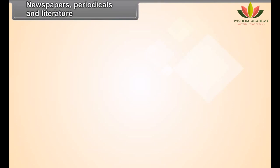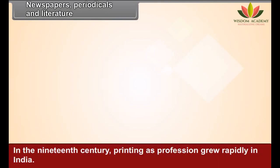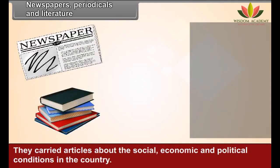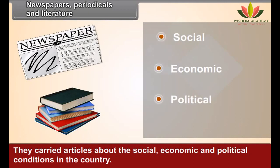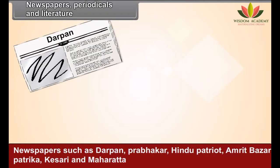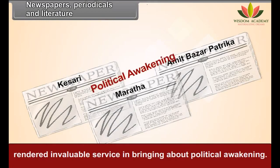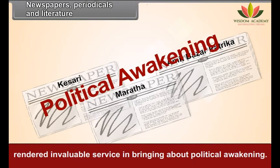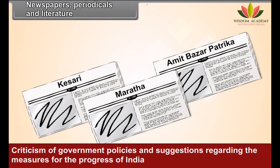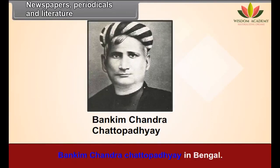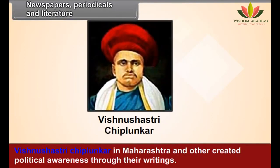Newspapers, Periodicals and Literature: In the 19th century, printing as a profession grew rapidly in India. Newspapers and periodicals were published in regional languages as well as in English, carrying articles about the social, economic and political conditions in the country. Newspapers such as Darpan, Prabhakar, Hindu Patriot, Amrit Bazaar Patrika, Kesari and Maharatta rendered invaluable service in bringing about political awakening. Criticism of government policies and suggestions regarding the measures for the progress of India appeared in these papers and periodicals. Bankim Chandra Chattopadhyay in Bengal and Vishnu Shastri Chippurunkar in Maharashtra and others created political awareness through their writings.